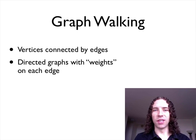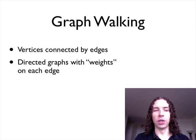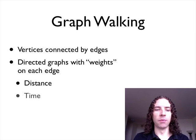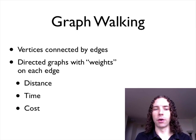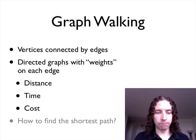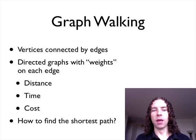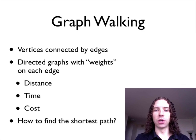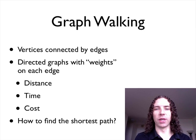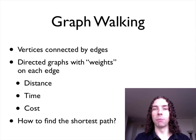Weights themselves are just an abstract notion of some sort of expense for traversing the edge. These typically refer to things like distance, time, or maybe a monetary cost associated with using it — say if it's a toll booth or something like that. What we're usually wanting to find is the shortest path, where shortest is defined in terms of the lowest overall weight, because whatever the weight is measuring is an expense you're trying to minimize.